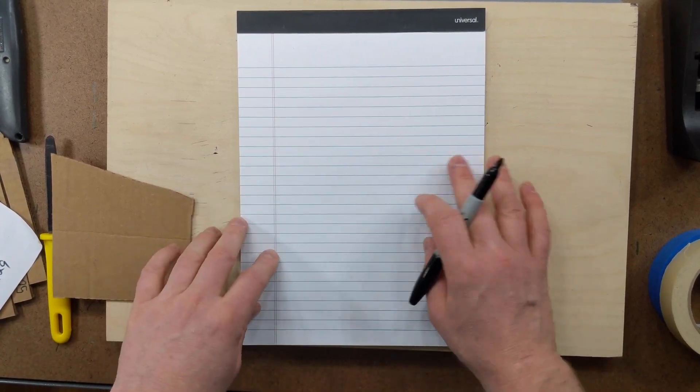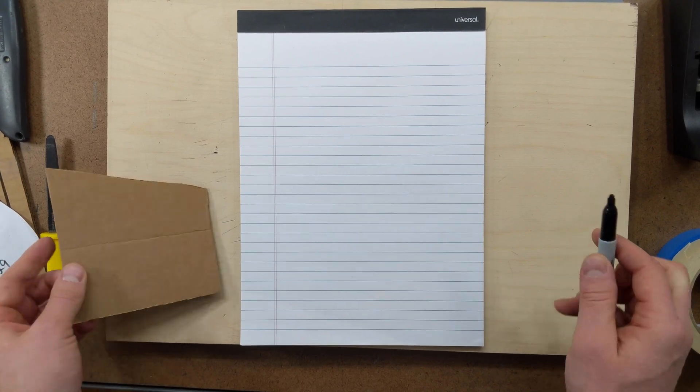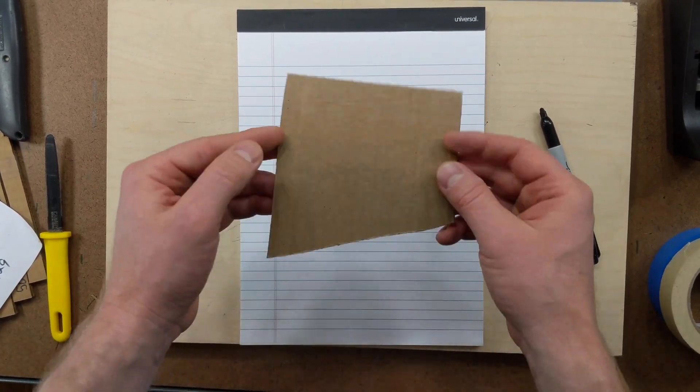When we're working on a new design and we've sketched it all out, we often want to make a scale model. A cheap, easy material to make a scale model out of is cardboard.